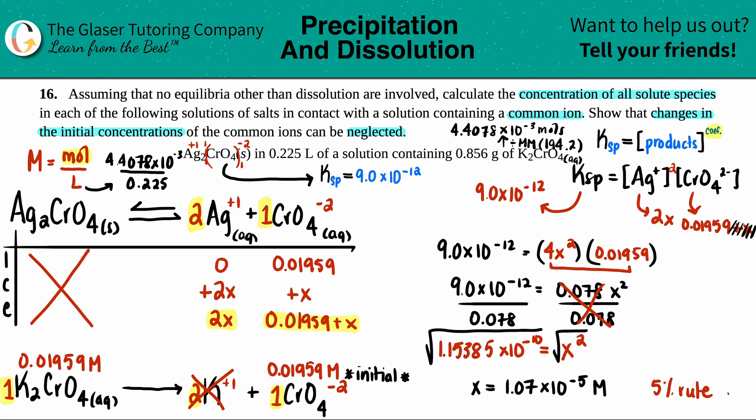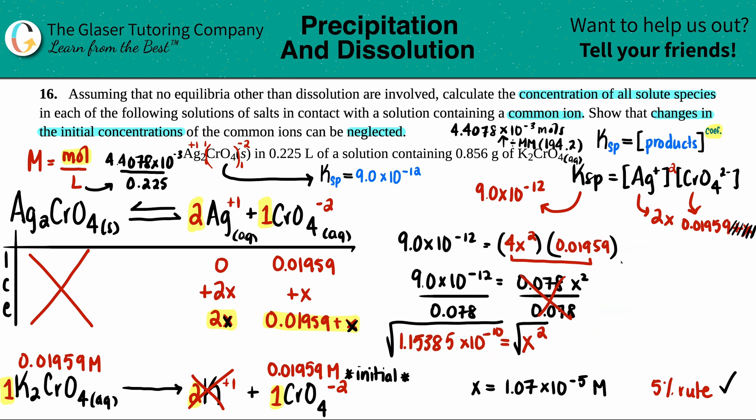Now we take this x value and divvy it up for all the x's in our equilibrium. The Ag concentration was 2 times the x value, so 2 times 1.07 times 10 to the negative 5th equals 2.14 times 10 to the negative 5th molarity.